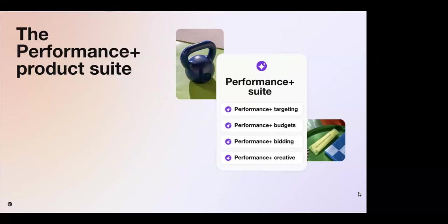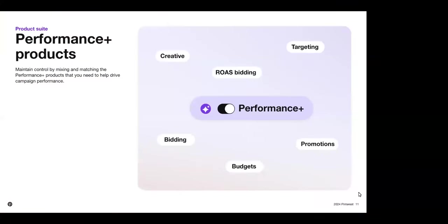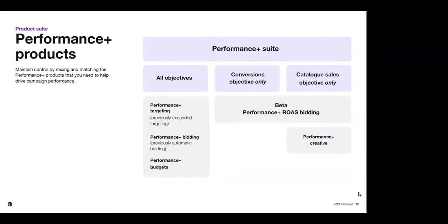Thanks, Murali. Let's dive deeper into the Performance Plus product suite. Just as a note, I am experiencing a little bit of technical issues with my camera, so unfortunately you can't see me, but the most important thing is you can see the slides. Pinterest Performance Plus products are designed as automated ways to help get the most from your Pinterest advertising efforts across multiple objectives. Products like Performance Plus Targeting, Performance Plus Bidding, and Performance Plus Budgets can be leveraged across campaign objectives to help improve media outcomes. New features like Performance Plus ROAS bidding or Performance Plus Creative can be applied to specific objectives as needed to drive lower funnel goals.